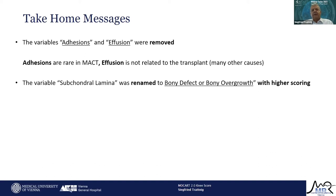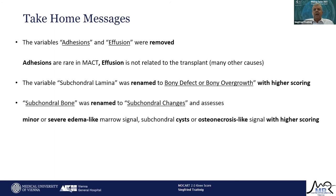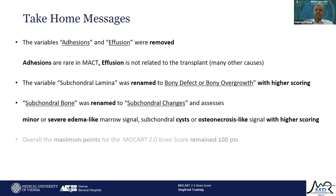We renamed the subchondral lamina variable to 'bony defect and bony overgrowth,' now with a higher maximum of 10 instead of the original 5 points. The subchondral bone variable was renamed to 'subchondral changes,' now differentiating between minor and severe edema-like marrow signal, subchondral cysts, and osteonecrosis-like signal, with a maximum score raised from 5 to 20 points. The overall maximum points for a perfect outcome with MOCAD 2.0 remains 100, allowing comparison with the original score.